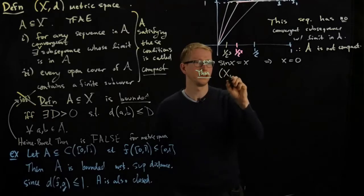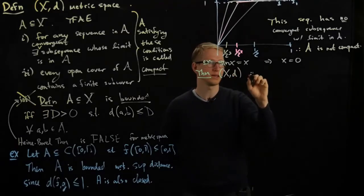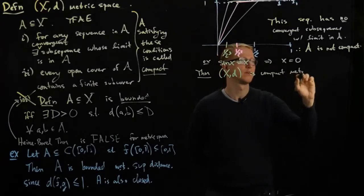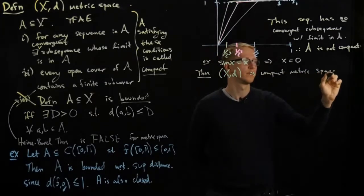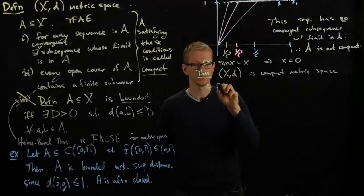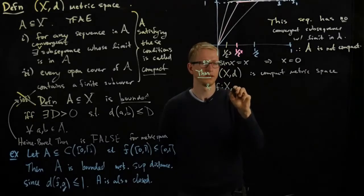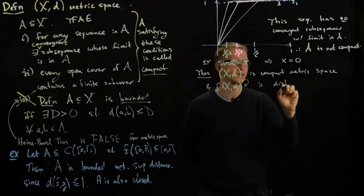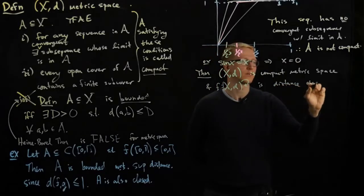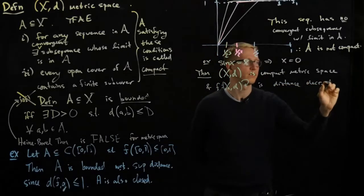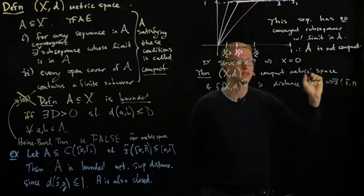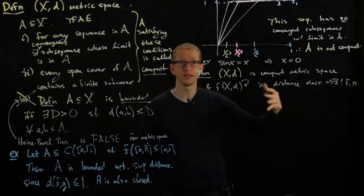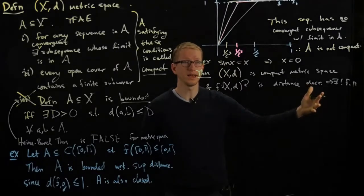Even though sine x is not a contraction, it is distance decreasing. And so we have a theorem that if X is a compact metric space and f is distance decreasing, then there exists a unique fixed point.